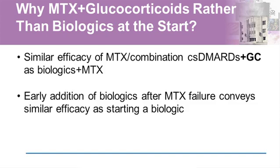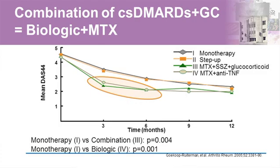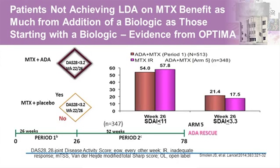Why methotrexate and glucocorticoids rather than biologics? Note that the ACR draft guidelines released Monday actually suggested going with monotherapy now, without steroids, as first line, followed by early addition of a biologic after methotrexate failure. The supporting evidence shows that the combination of methotrexate with glucocorticoid appears to be as good as the combination of methotrexate and anti-TNF in reducing DAS-44.